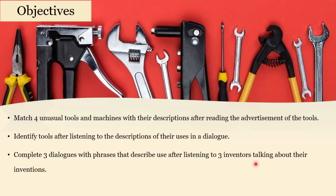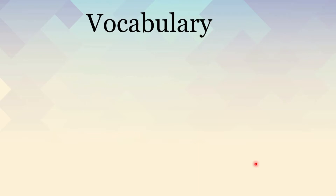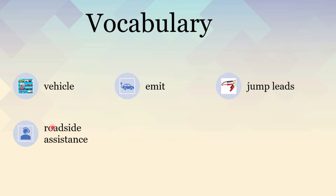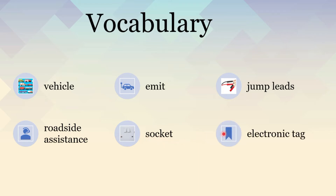Now, before we start, let's take a look at some words we will come across in this lesson. Number one: vehicle. Emit. Jump leads. Roadside assistance. Socket. And the last one is electronic tag.